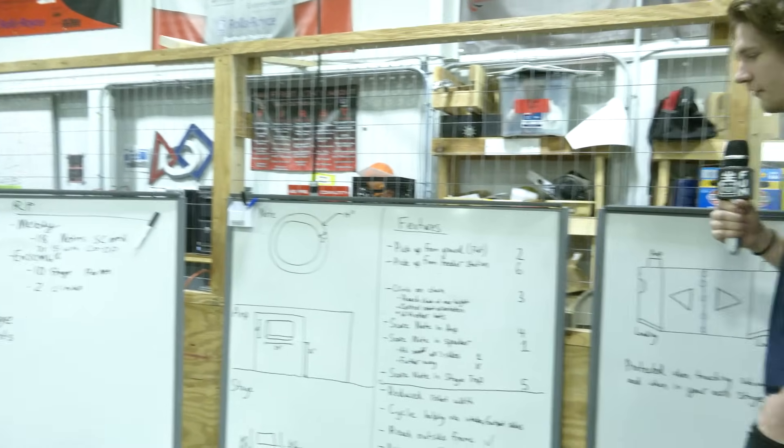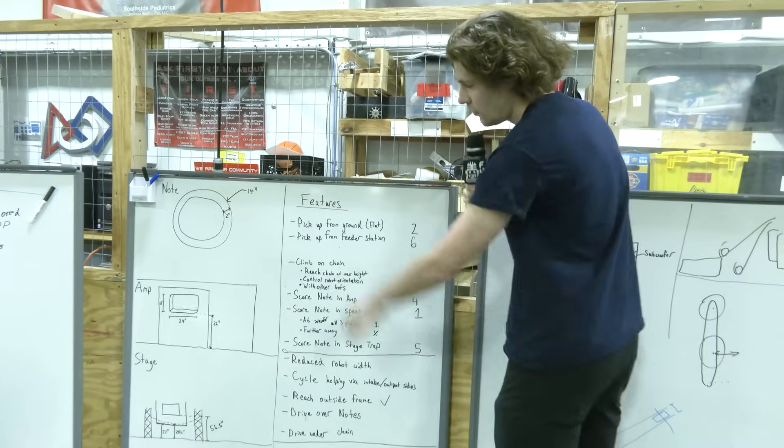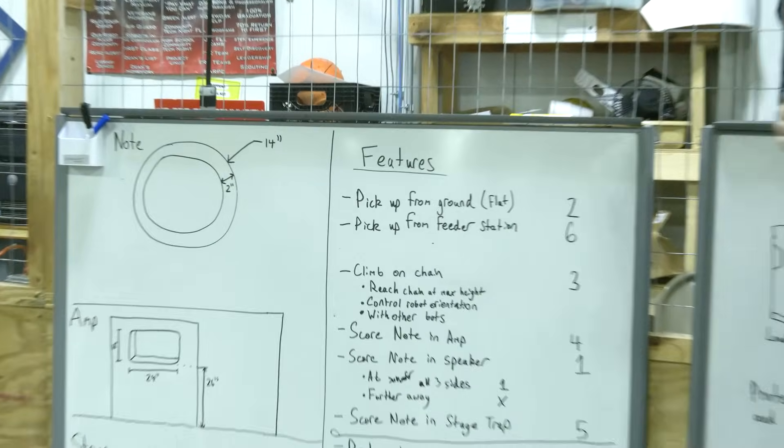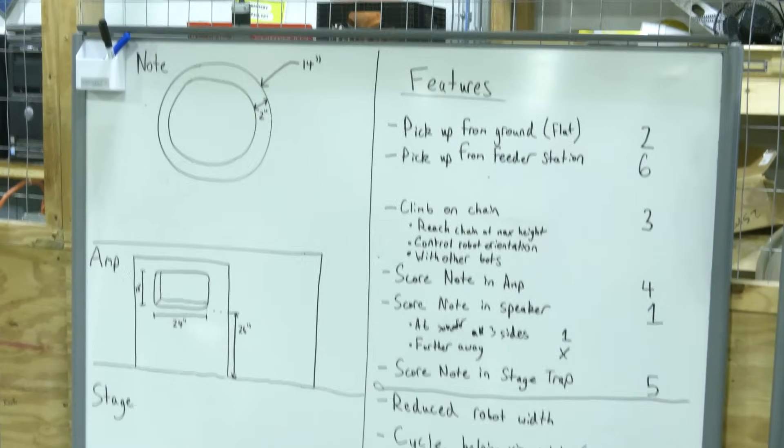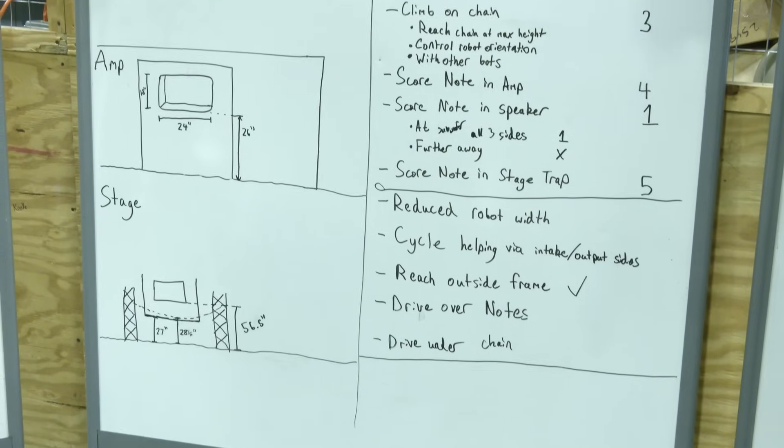Moving over here, you can see our feature breakdown. We have some dimensions of what we thought about the game pieces and game elements. Moving here towards the features of the game, basically these were our objectives for the game that we thought were most important.